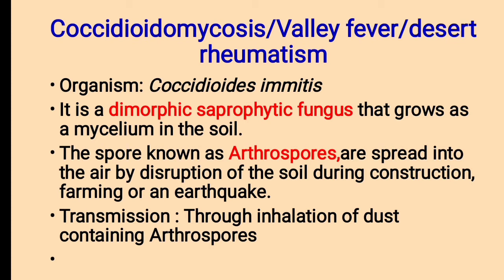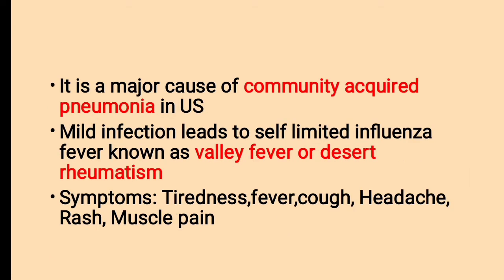3. Coccidioidomycosis. Coccidioides immitis is a dimorphic saprophytic fungus that grows as a mycelium in the soil. Dimorphic means the fungus exists as both yeast and mold forms. The disease spreads through the formation of arthrospores, mainly spread by air during activities like construction, farming, or natural calamities like earthquakes. Transmission is through inhalation of dust particles containing arthrospores. It is a major cause of community-acquired pneumonia in the US.